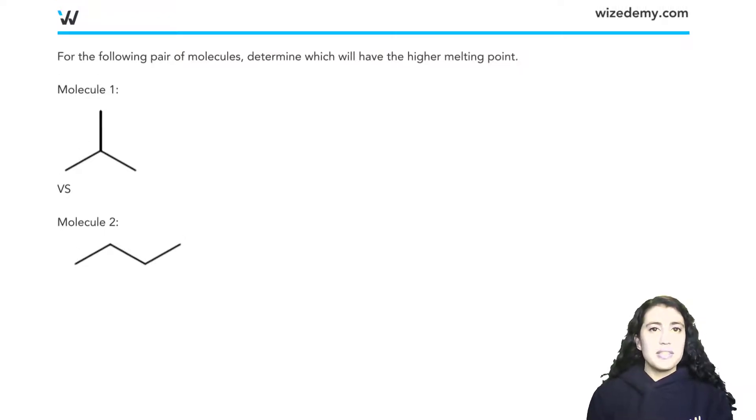Okay, so I want to throw in this example just to see if we understood the concept of the melting point and boiling point. So it says, for the following pair of molecules, determine which will have the higher melting point.